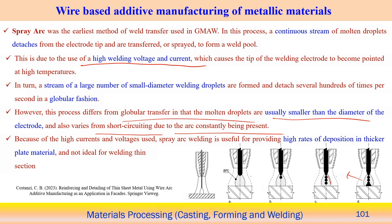Spray arc welding provides a very high deposition rate and is useful for thick plate material, but is not ideal for very thin sections. The liquid droplets can disperse outward from the arc area, making it difficult to precisely target a small position in the additive manufacturing process.